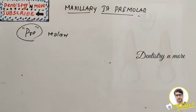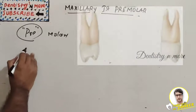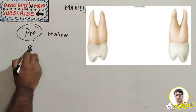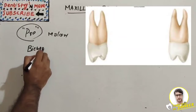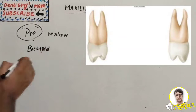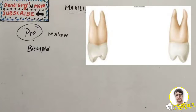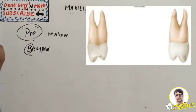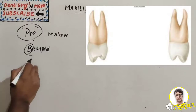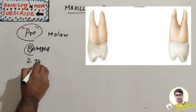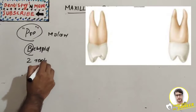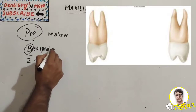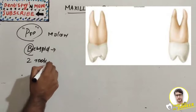The premolar has two cusps, which is why it is also known as a bicuspid. We learned that a cuspid is a canine; this is a bicuspid because it has two cusps. It also has two roots — two roots and two cusps.